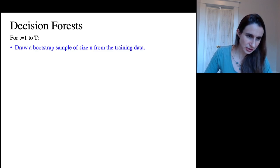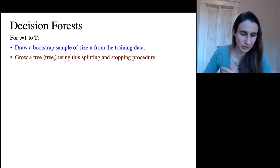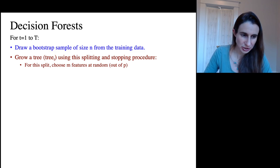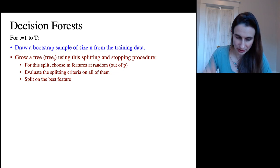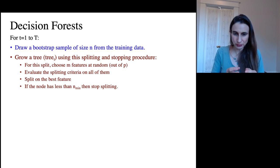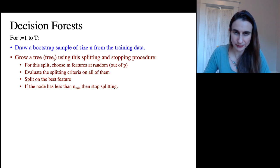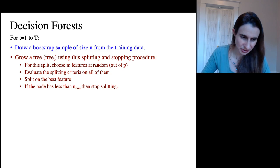So decision forests, for a whole bunch of iterations, for each iteration you draw a bootstrap sample of size n from the training data. You grow a tree and you use an interesting splitting procedure. So the splitting procedure goes like this. For each split, you choose only a subset of features that you're willing to consider for that split. And you evaluate the splitting criteria on all of those m features, not all p of them, just m of them. And then you split on the best one. And then if you realize that you only have a small amount of data in your leaf, then you don't split it anymore. So this seems like it would be fairly overfitted, and that's okay, because remember we're going to average them all together at the end.